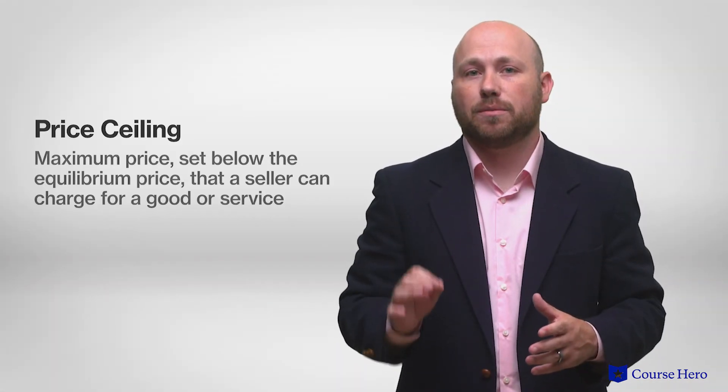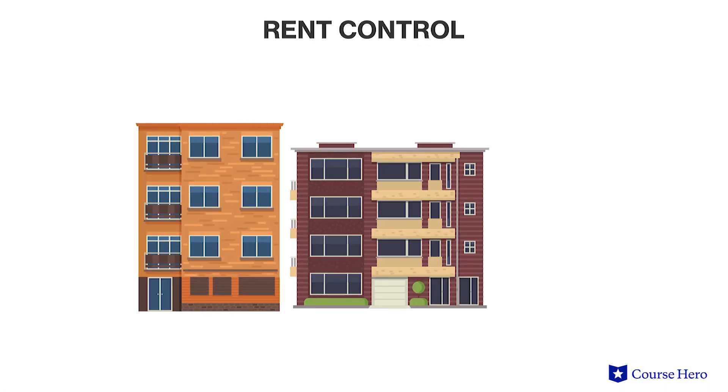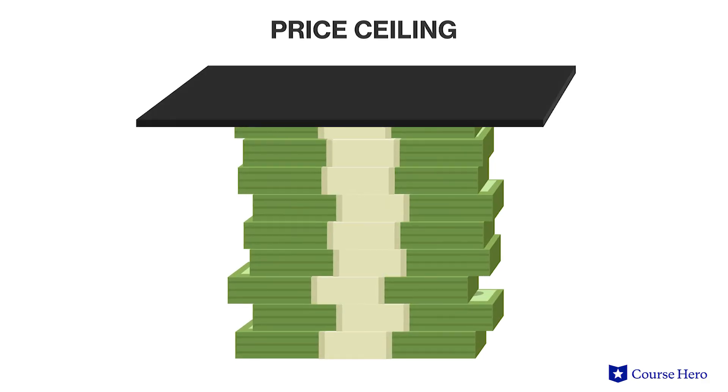An effective price ceiling is a maximum price set below the equilibrium price that a seller can charge for a good or service. Price ceilings are implemented whenever governments believe that prices are too high for a good or service. Rent control is a popular example of a price ceiling — rent cannot exceed the maximum price set by the government even though the market may want it to be higher. Lower rent makes it possible for more people to afford the basic need of shelter, particularly in more expensive cities. With a price ceiling, the market is not in equilibrium because the quantity demanded is greater than the quantity supplied, causing producers to earn less revenue and supply fewer goods than consumers demand, resulting in a shortage.